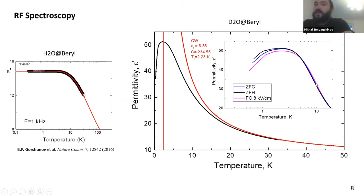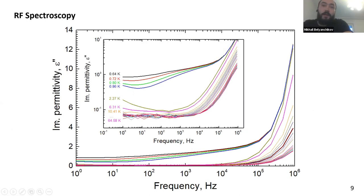We also measured the field dependence, but our sample almost didn't show any dependence on the constant DC field applied to the sample. And this behavior might be understood from the imaginary part of permittivity, from the spectrum of imaginary parts. Here you can see the spectrum at different temperatures. And in the log-log plot, you can see that after cooling down below 2 Kelvin, wide absorption bands start appearing at the low frequencies.